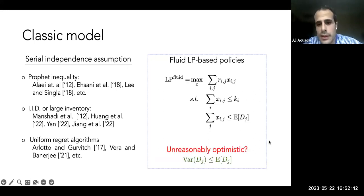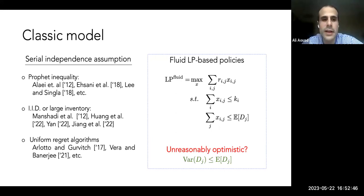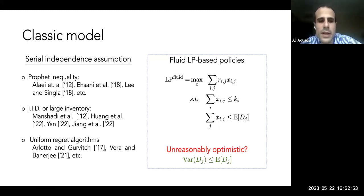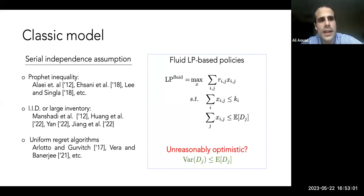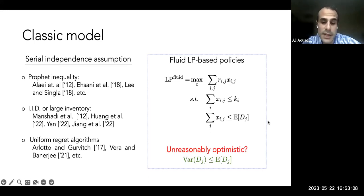This makes sense in regimes where variance is small against the mean — some form of concentration. But the question is: are we overfitting to the assumption that variance is lower than the mean? Is this an unreasonably optimistic assumption? For service systems, there's been work on the adequacy of the Poisson model, though perhaps less so for platform and matching settings.